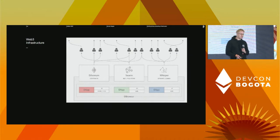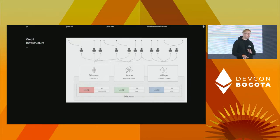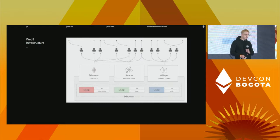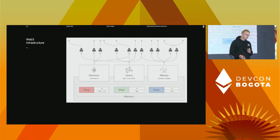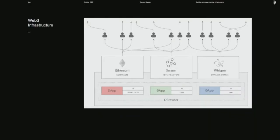Infrastructure is what lies underneath. Per the original Web3 vision, you had Ethereum for computing and consensus, Swarm for storage, and Whisper for messaging. Waku has taken over the mantle from Whisper, and it's a lot more usable today than Whisper ever was for many reasons.